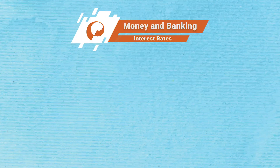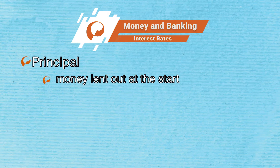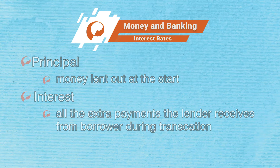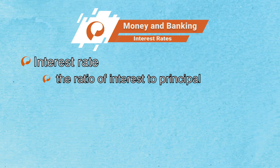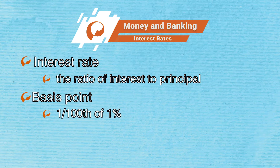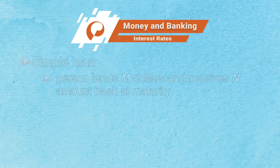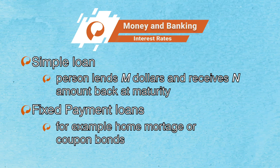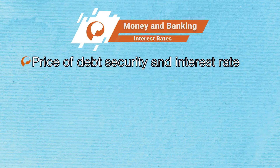Unlike cash, other financial assets often pay interest. In a credit transaction, the money lent out at the start is called the principal, while the interest is all the extra payments the lender receives from the borrower over the duration of the transaction. The interest rate is the ratio of interest to principal. Interest rates are measured in basis points — a basis point is one hundredth of one percent. The interest rate is easy to compute in the case of a simple loan, where a person lends M dollars to another and receives N dollars back at maturity. In the case of fixed payment loans, for example a home mortgage or a coupon bond, computing the interest rate is more difficult. There is a negative relationship between the price of a debt security, say a bond, and the interest rate.